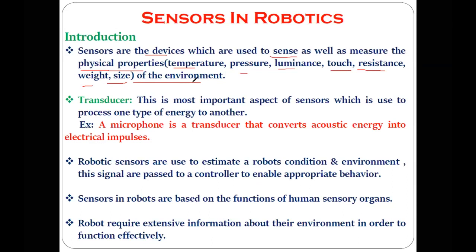As human beings we can easily measure these physical properties of the environment because by nature we have all these capabilities. But in case of robots, we have to put all these capabilities inside the robot through devices like sensors. Within sensors, there is one most important component called a transducer.